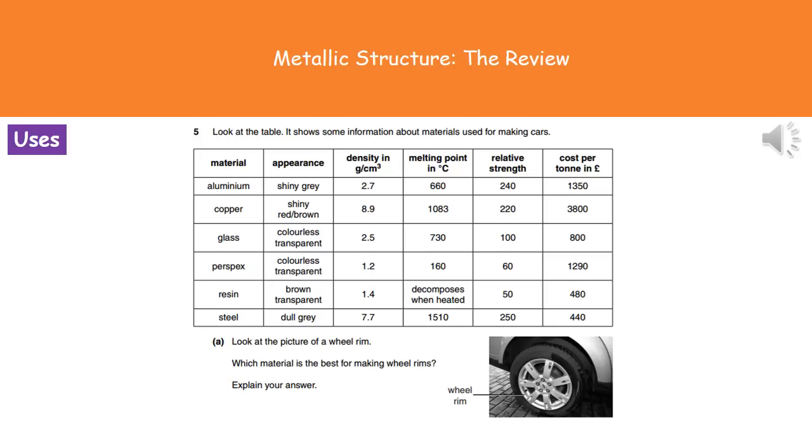What they're looking for you to do here is think about the properties that would be most beneficial for that particular use. So if we're looking at the wheel rim then having a look at the different options we've got there. We've got the appearance, the density, the melting point, the relative strength and the cost per tonne.